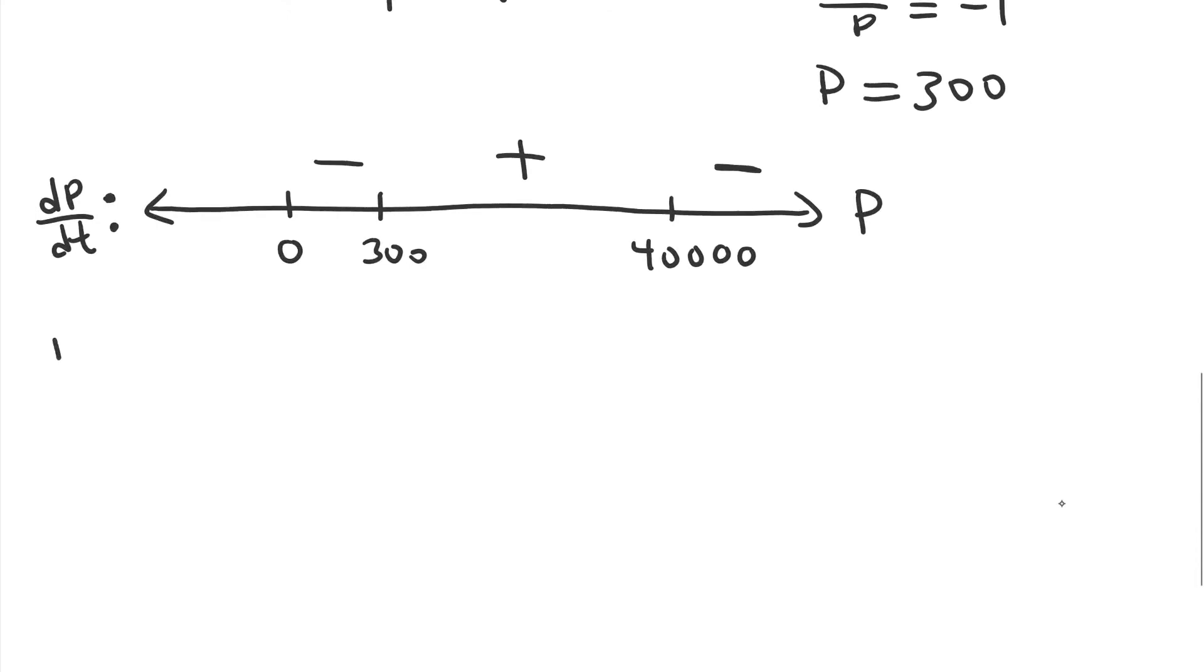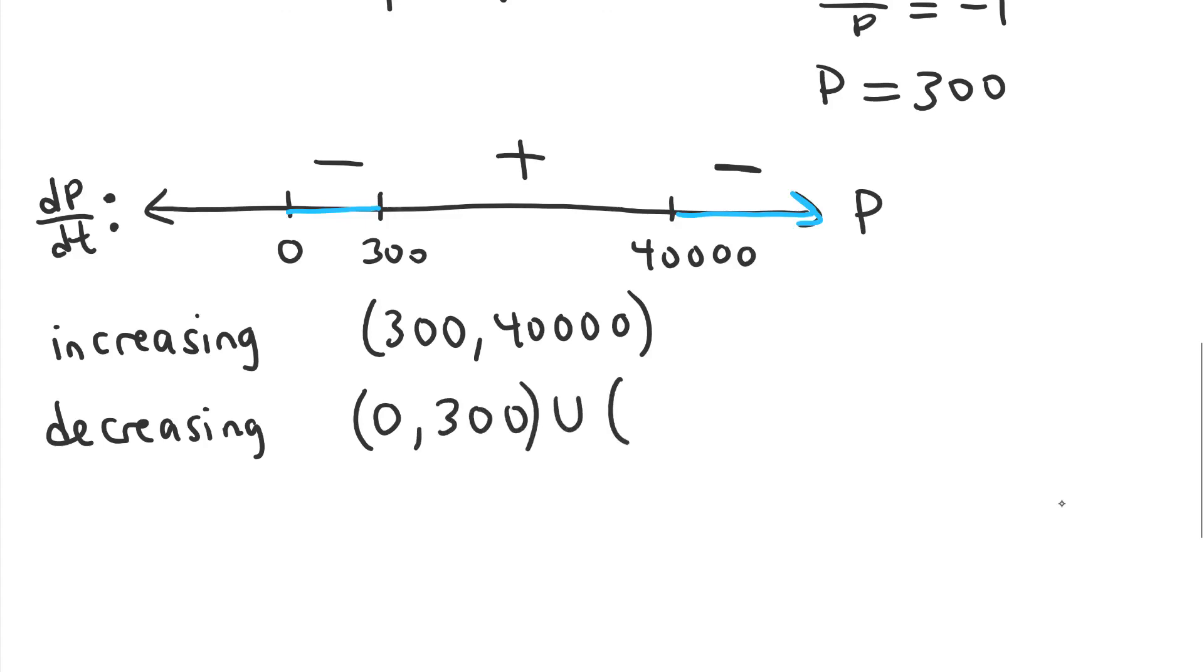Okay, so putting it together, the population is increasing if P is in the interval from 300 to 40,000. That's this middle interval right here. And P is decreasing if we're in this interval or this interval. Not including 0 and not including 300. Because at 300, the rate of change is equal to 0. It's not negative. And so we're taking the interval from 0 to 300, and we'll union that with the interval from 40,000 to infinity.